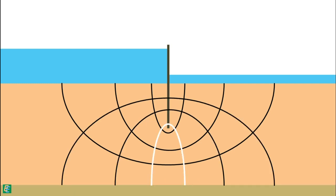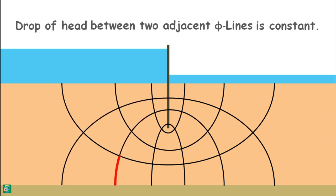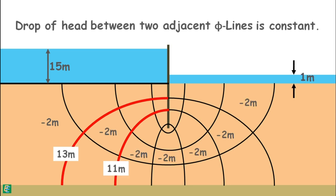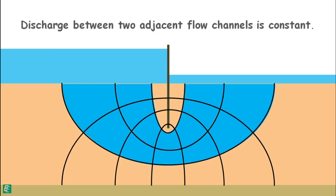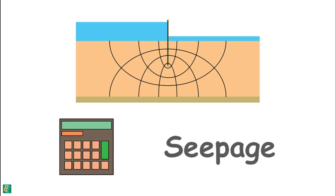Equipotential lines are drawn such that the drop in head between two adjacent equipotential lines is constant. For example, if the head at the first equipotential line is 15 m and drops by 2 m, then each subsequent drop should also be 2 m, and so on. Also, the discharge between two adjacent flow channels is constant. Now that we have constructed the flow net, its graphical properties can be used to calculate the seepage through the soil.